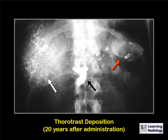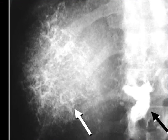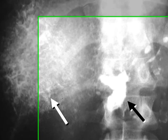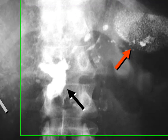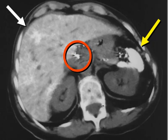This is an example on conventional radiography of Thorotrast deposition 20 years after administration. The white arrow demonstrates uptake in the liver, the black arrow in the celiac lymph nodes, and the red arrow in a contracted spleen. This compound was not only radio-opaque but radioactive. A CT scan of another individual shows the liver is uniformly dense because it contains Thorotrast, with the red circle showing uptake in celiac nodes and the yellow arrow showing a very dense spleen.